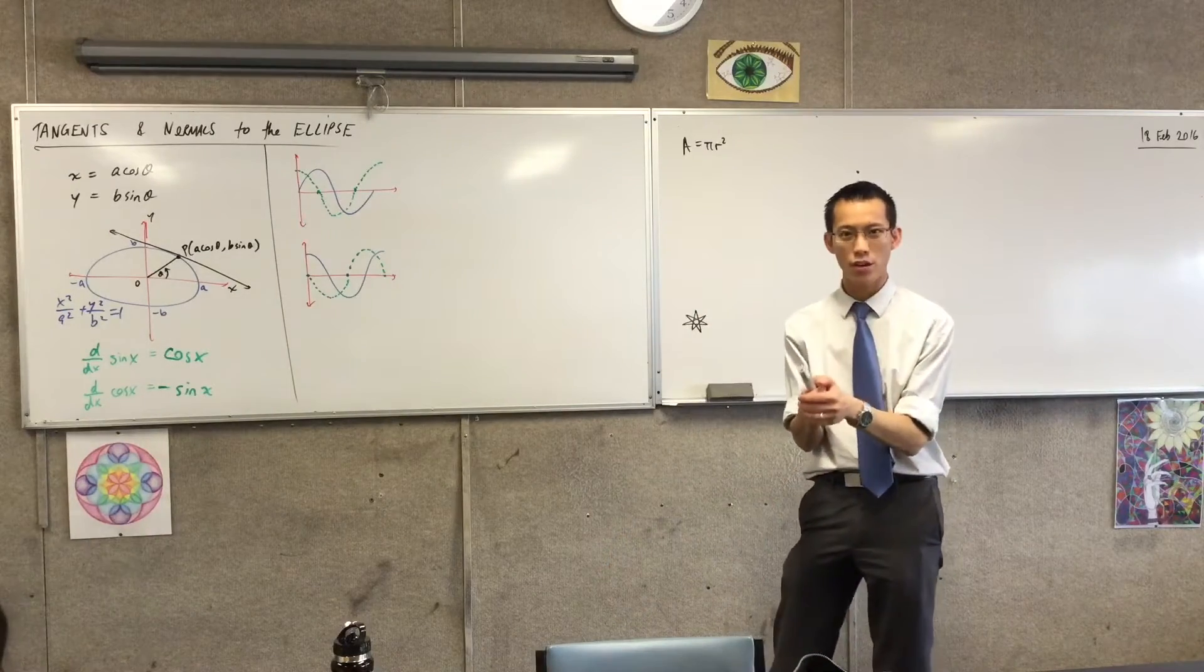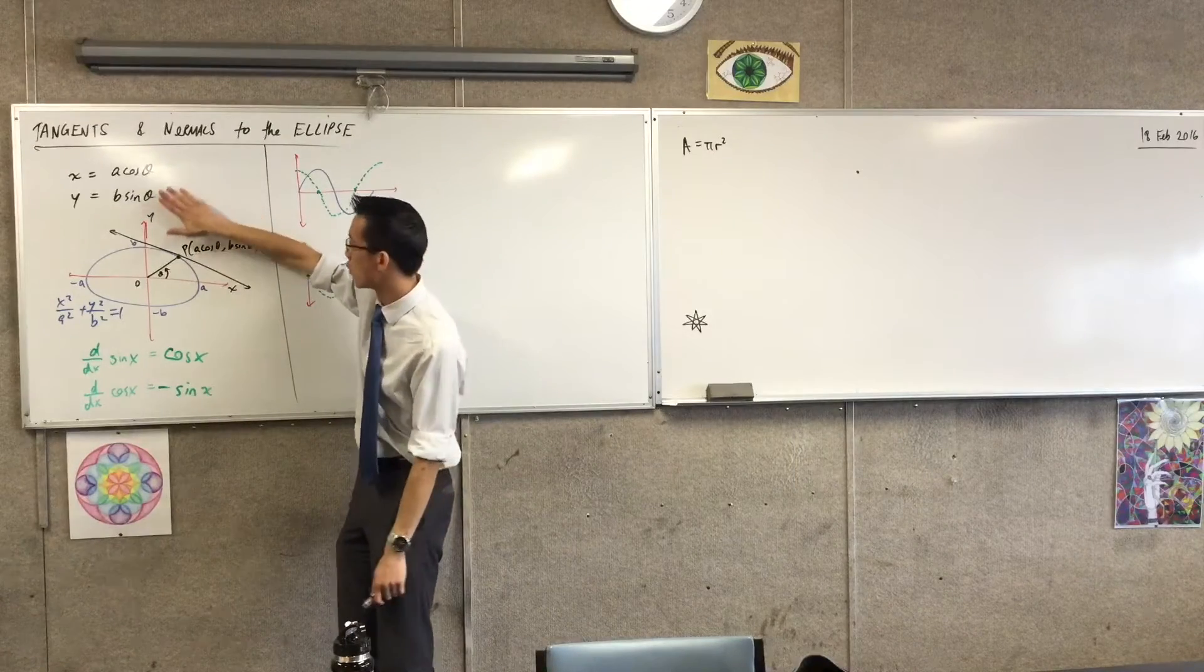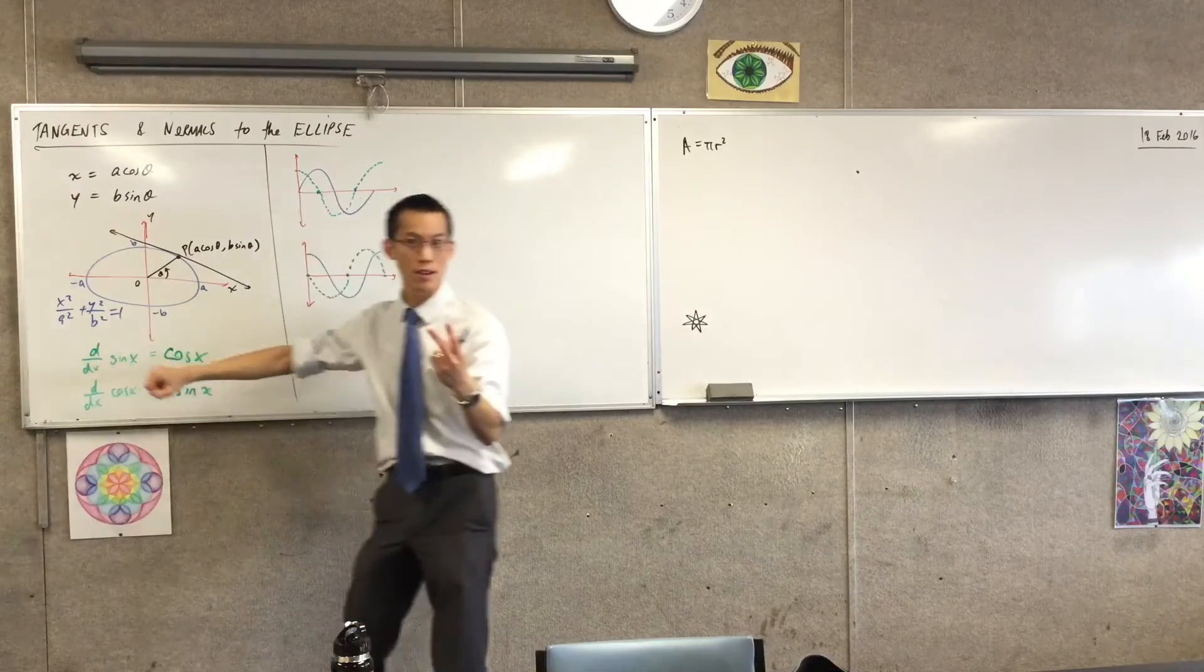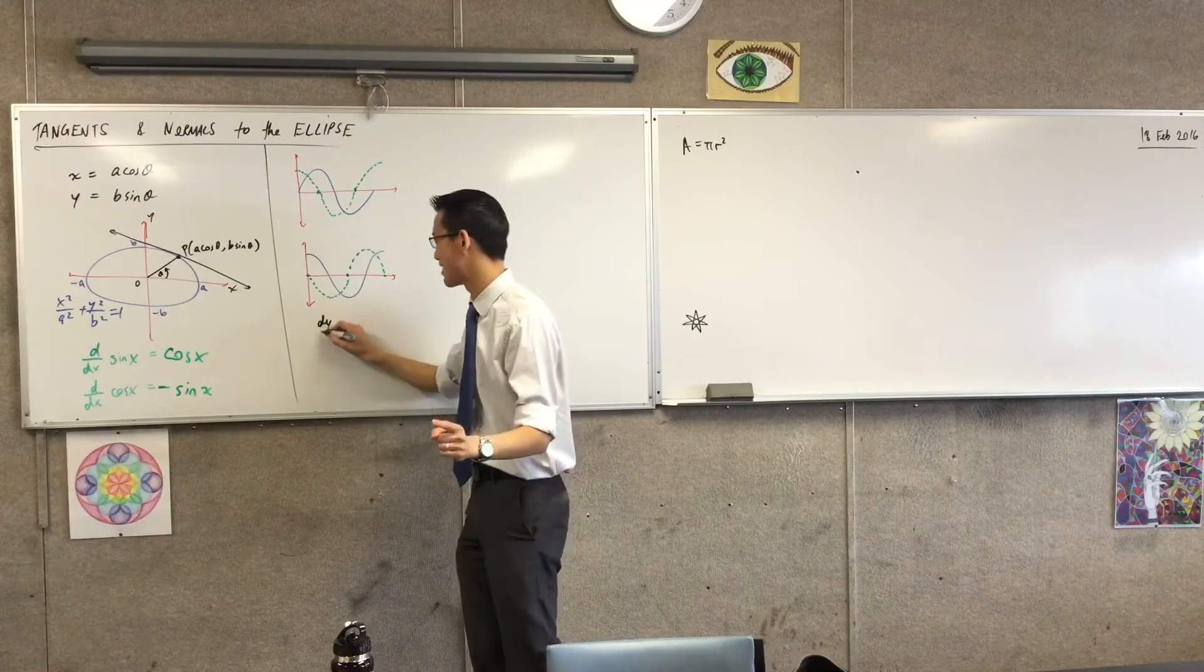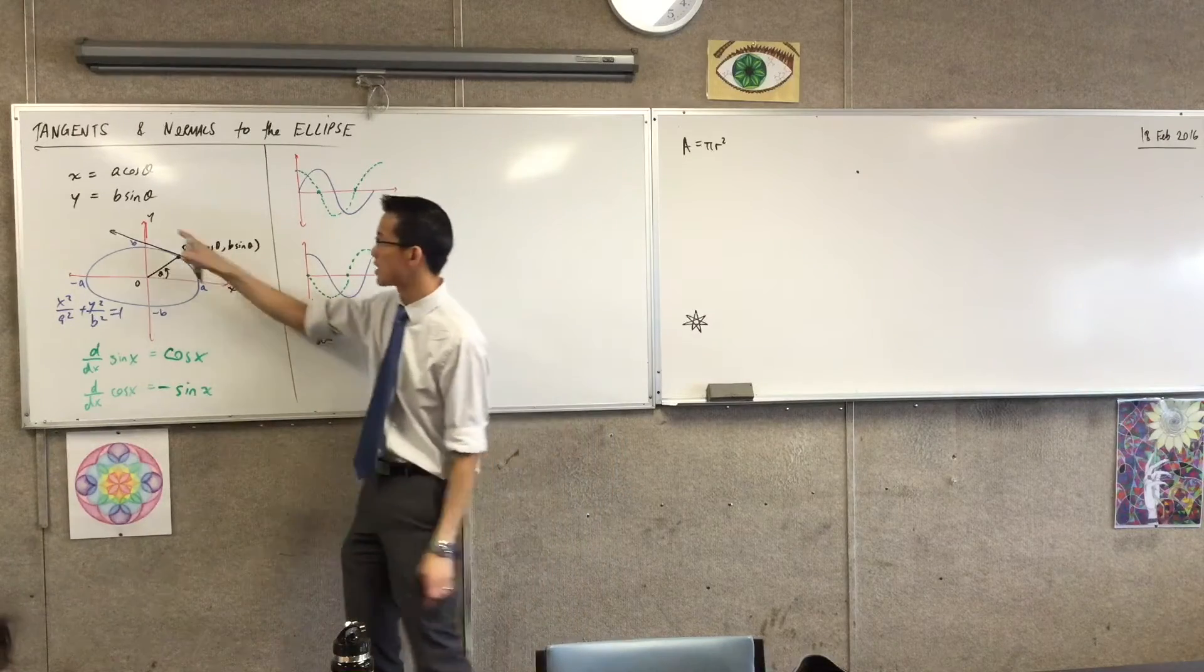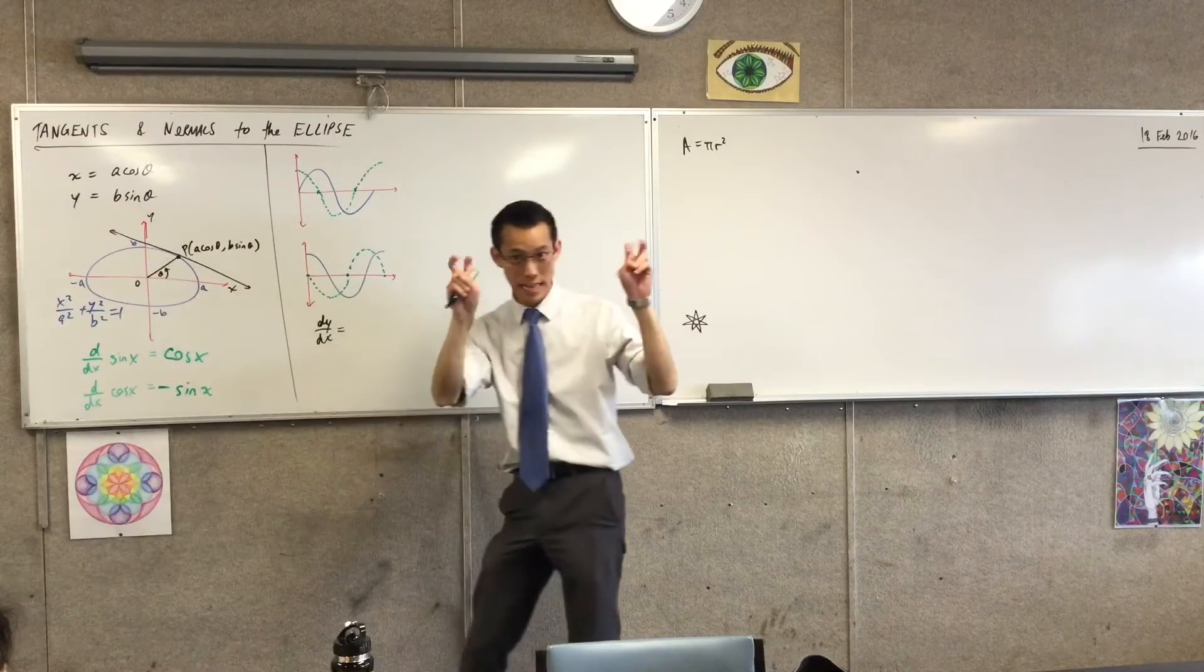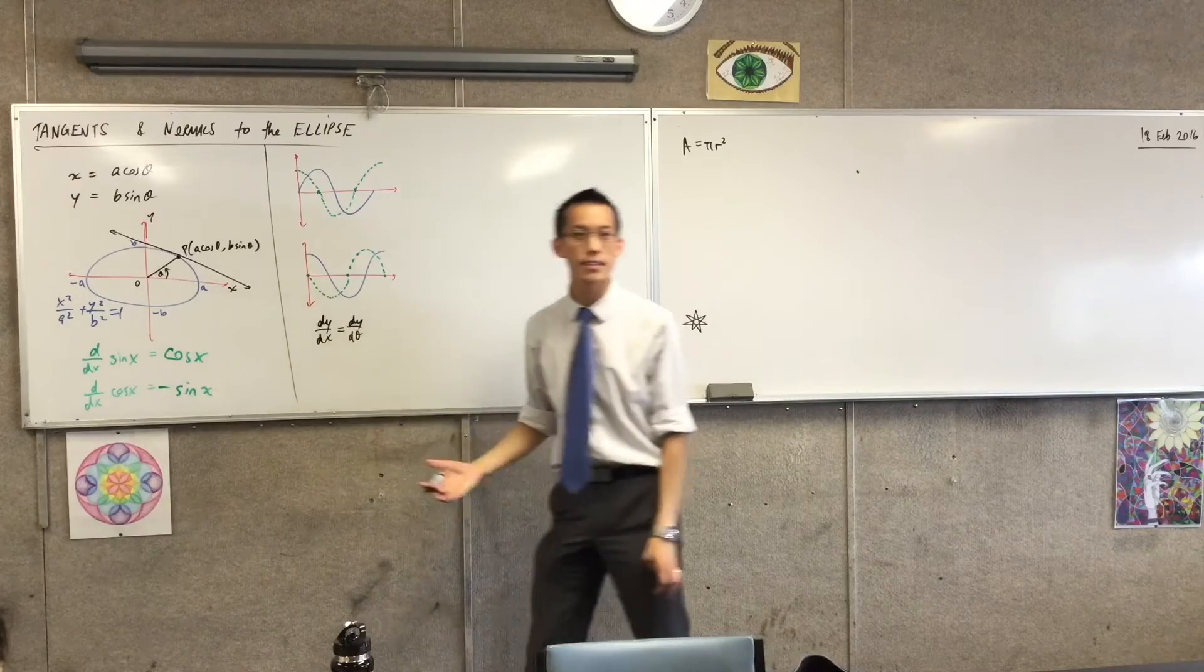So what piece of information am I going to use that can connect a derivative of this and a derivative of this to a derivative of this? Two words, you want to know? Chain rule. Chain rule. I'm after dy/dx, right? I'm after dy/dx.